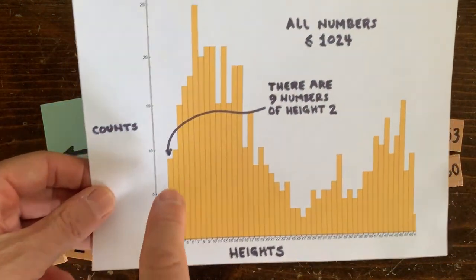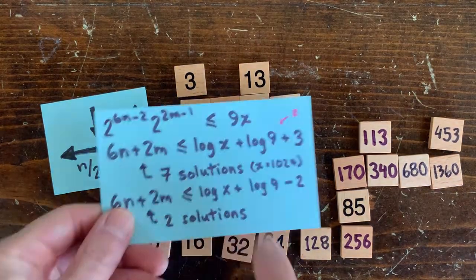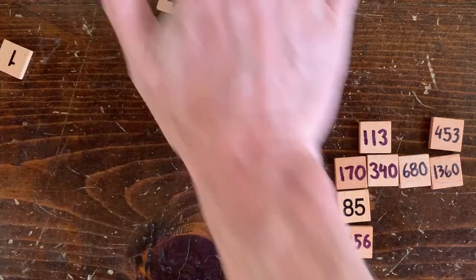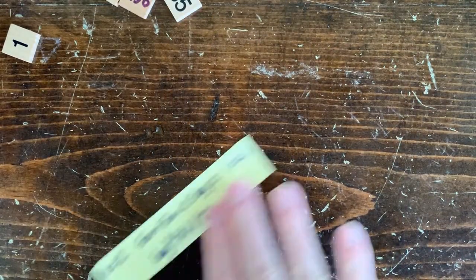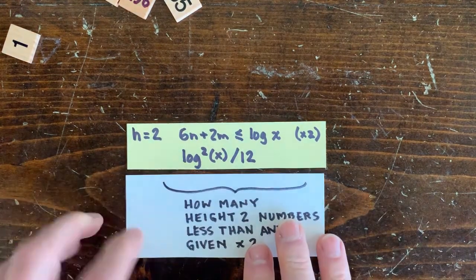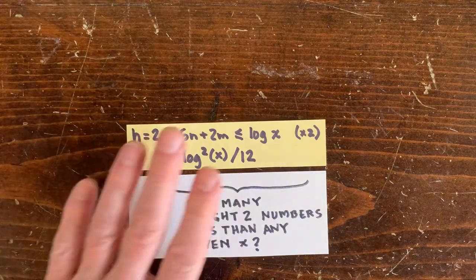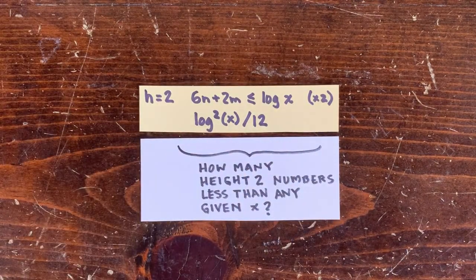And now as x gets bigger, this log 9 stuff isn't going to matter too much. So to simplify, let's just double the number of solutions for 6n plus 2m is less than or equal to log x. And that gives us log squared x over 6 times 2 in general.